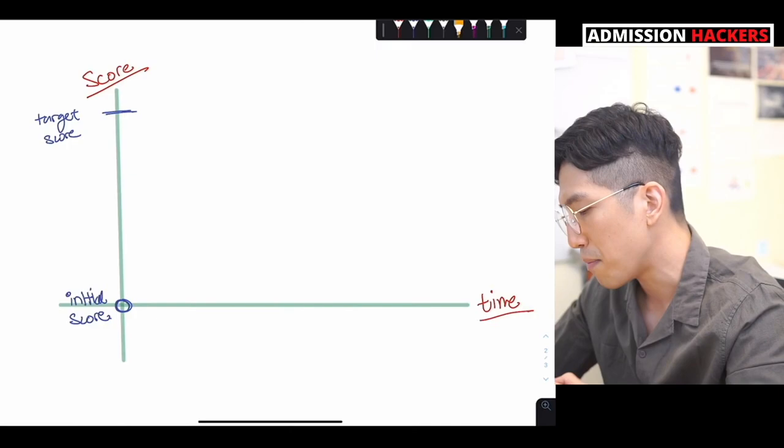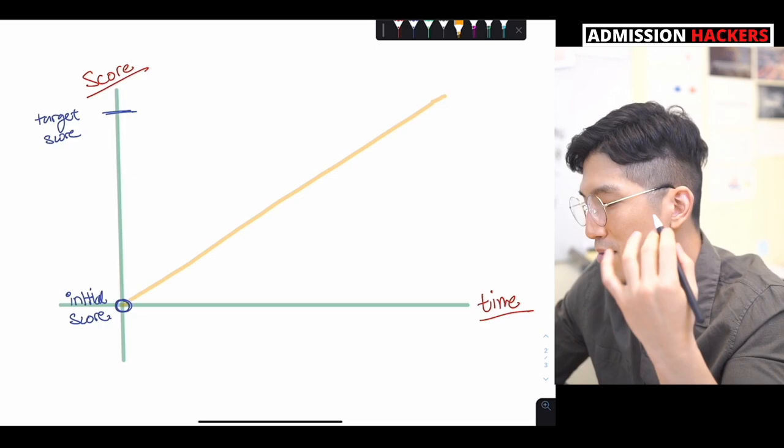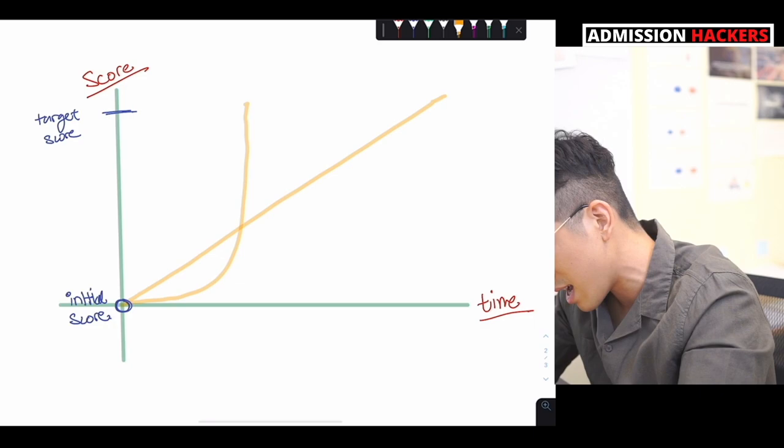Most students studying for the SAT right now have a general expectation on how their SAT score is going to go up over time. For example, some students think that their score is probably going to go up in a linear fashion where they're going to make a little bit of improvements as time goes by. And some students think that, oh, I'm a genius. I'm just going to study for a little bit and my score is going to skyrocket and I'm going to hit my target score like so.